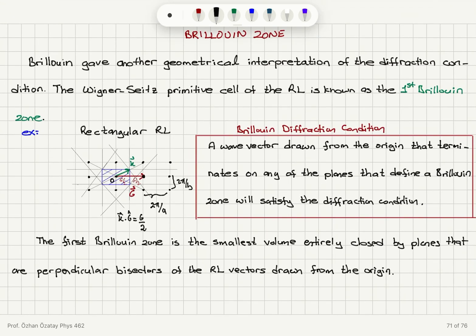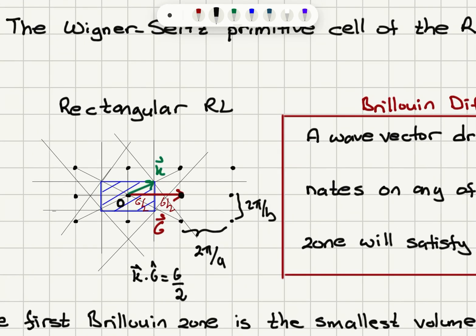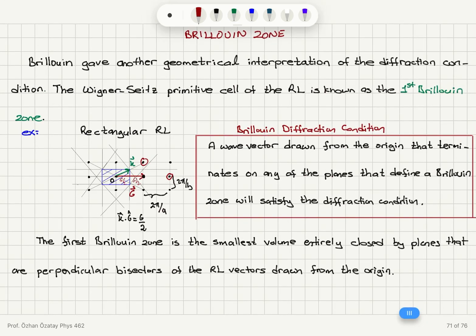The Wigner-Seitz primitive cell of the reciprocal lattice is the first Brillouin zone — the smallest volume entirely enclosed by planes that are perpendicular bisectors of reciprocal lattice vectors drawn from the origin. We can continue this procedure by connecting to second nearest neighbors, then third, yielding the second Brillouin zone, third Brillouin zone, and so on.